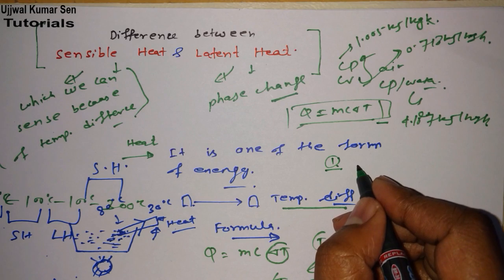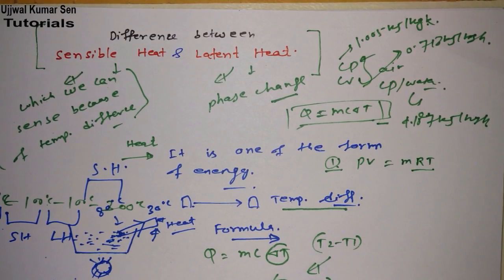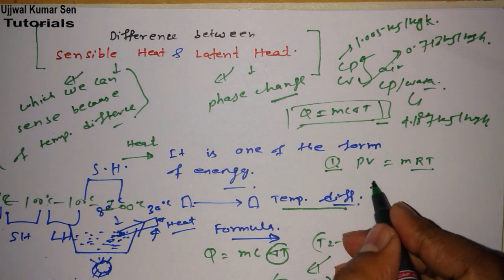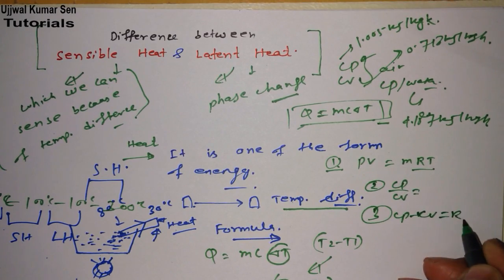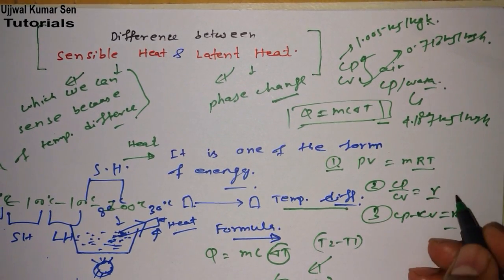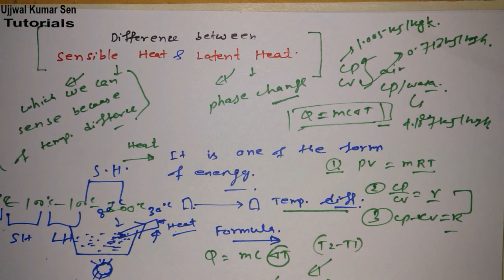Second, I would recommend you must know the ideal gas equation: PV equals mRT. You can also use this equation here. You should also know what CP by CV is, and what CP minus CV is. CP minus CV equals R, and CP by CV equals gamma. There are also relations they can ask in the examination. These things are very important if you are preparing for examinations like GATE, where knowing these things is really helpful.